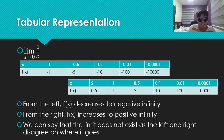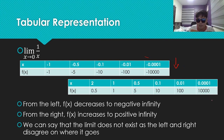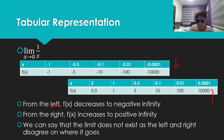This is the tabular representation of the function from earlier. From the negative side, x approaches 0 from below, and the f of x values go down towards negative infinity. From the positive side, x approaches 0 from above, and the f of x values go up towards positive infinity. So from the left, f of x decreases to negative infinity, and from the right, f of x increases to positive infinity. We can say the limit doesn't exist, as the left and right disagree on where it goes.